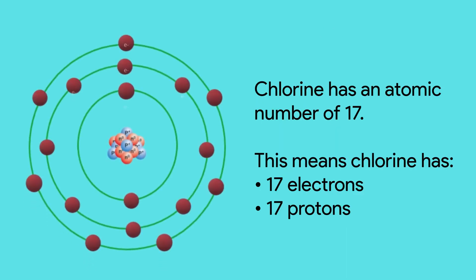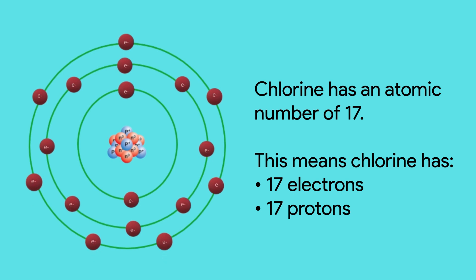Chlorine has 17 electrons, 17 protons, and 18 neutrons. Its atomic number is 17.